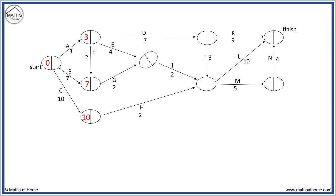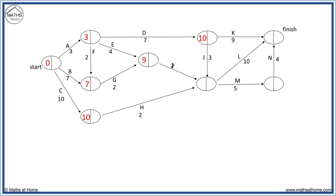To get to this node, we have 3 plus 4 equals 7, or 7 plus 2 equals 9. We write 9 in the node. 3 plus 7 equals 10. Here we have 10 plus 3 equals 13. 9 plus 2 equals 11, or 10 plus 2 equals 12. 13 gets to go in this node.